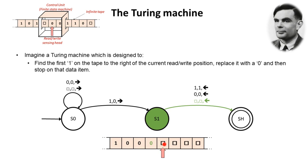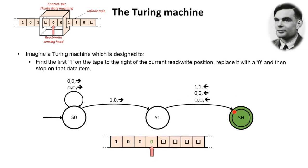The read write head now finds a square which represents a blank cell. So if we find a blank cell we output a blank cell and we move the read write head to the left. And this leaves us in the halt state and we have achieved the computation that this Turing machine was trying to complete.